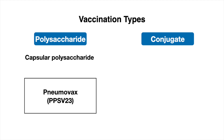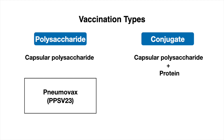On the other hand, the conjugate type consists of a capsular polysaccharide that is covalently linked or conjugated to a protein. With the pneumococcal conjugate vaccines, we have more than one type of vaccination, which we will go over in the next slide.